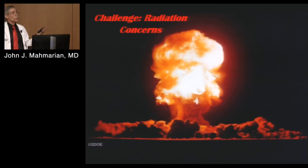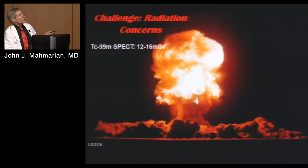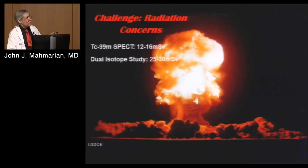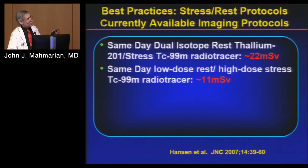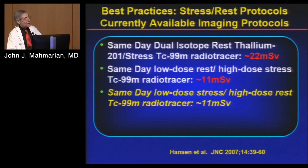When thinking about radionuclear imaging — and this is also for CT — we worry about radiation. With technetium tracers, doing a stress and rest study, we have anywhere from 12 to 16 millisieverts of radiation. With dual isotope thallium and technetium, it goes up to almost 30 millisieverts. It's very important to optimize imaging hardware and software and use protocols that limit radiation exposure. Generally, we use protocols with a low-dose stress and a high-dose rest, which gets down to about 11 millisieverts.